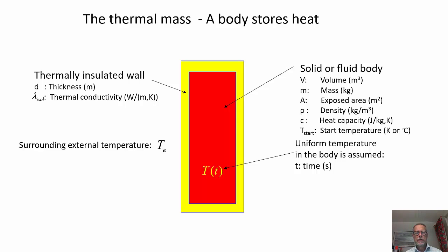I will assume that the temperature is uniform within this body. We would like to estimate or calculate the temperature, how it changes in time. The yellow area symbolizes the thermally insulated wall with the thickness d and the thermal conductivity λ_wall. And the surrounding temperature is T_e.